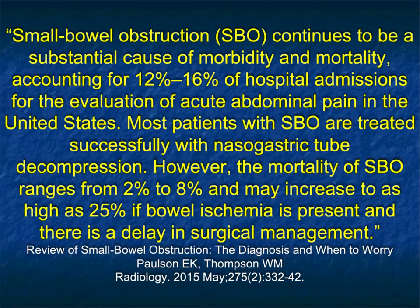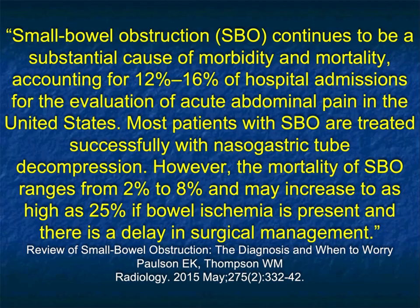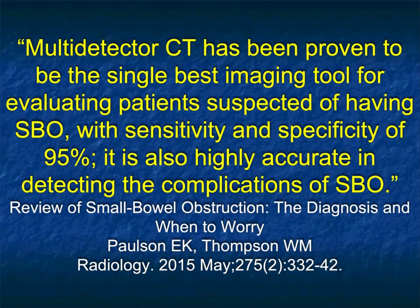When you look at small bowel obstruction in terms of morbidity and mortality, it accounts for up to 16% of hospital admissions for acute abdominal pain in the ER. Most patients are treated successfully with NG tube decompression. The key thing is separating who can be managed conservatively versus who needs surgery. The mortality of bowel obstruction ranges from 2 to 8%, but may increase as high as 25% if bowel ischemia is present and there's a delay in surgery. CT has been shown to be the best single imaging tool for evaluating suspected small bowel obstruction, with sensitivity and specificity in the 95% range.